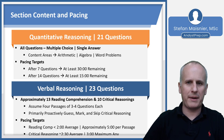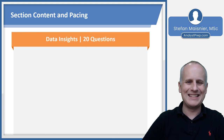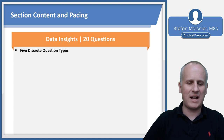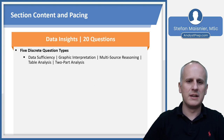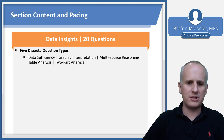The Data Insight section — the new section of the GMAT Focus — is going to have 20 questions and five discrete question types. This is where Data Sufficiency questions now live. You'll also have the four Integrated Reasoning question types: Graphics Interpretation, Multi-Source Reasoning, Table Analysis, and Two-Part Analysis.